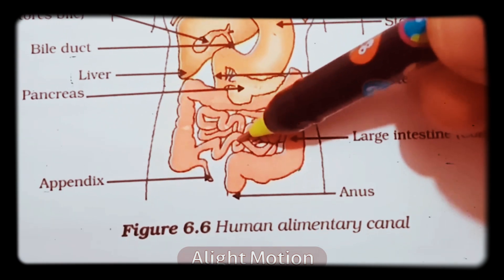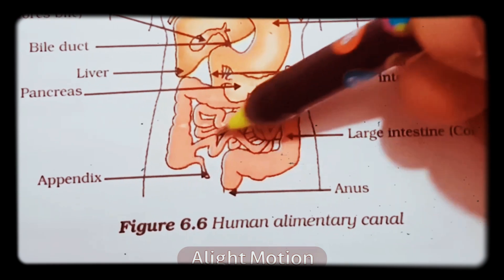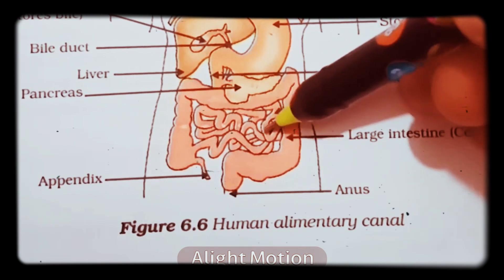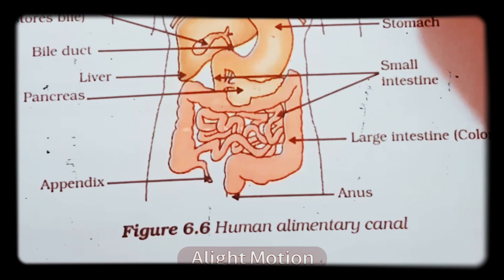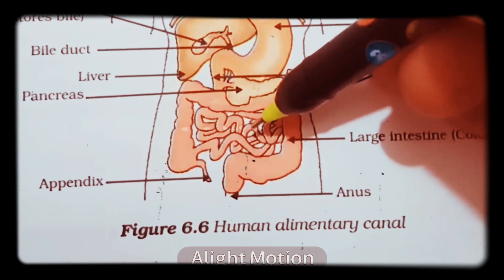The villi are made up of many blood vessels, and all the nutrients are supplied to the blood vessels and taken to different parts of the body. So absorption is taking place, and the remaining undigested or unabsorbed food is taken into the large intestine.